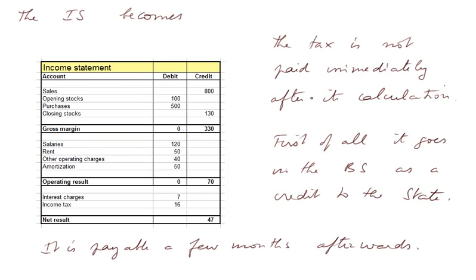The tax is not paid immediately after its calculation. First of all, it goes into the balance sheet as a credit to the state on the liability side, and it's payable a few months afterwards. Think of a cycle that ends at the end of December. It takes a few weeks to calculate the income statement and ending balance sheet, which takes place in late February, March, or April. Typically, the income tax will be payable in September of the following cycle.